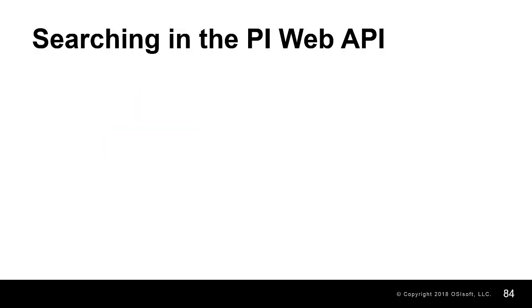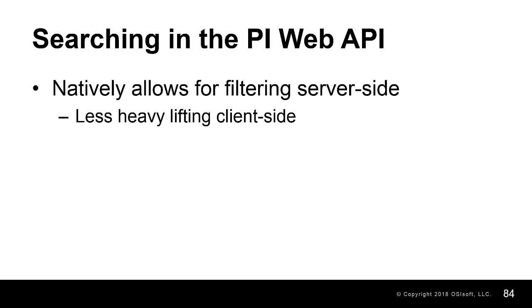One of the most important topics when developing your application is how to search for the information you need. The PI Web API has the option to search on attributes, event frames, elements, and other objects based on a number of search criteria natively.